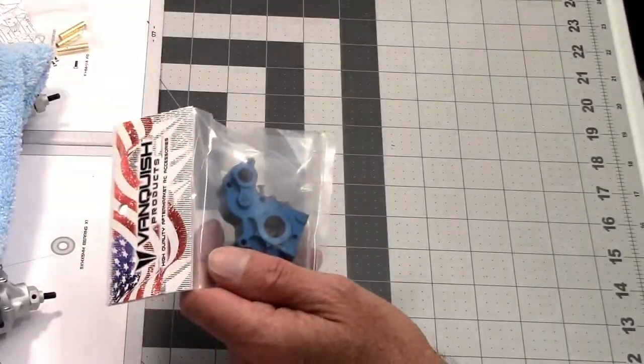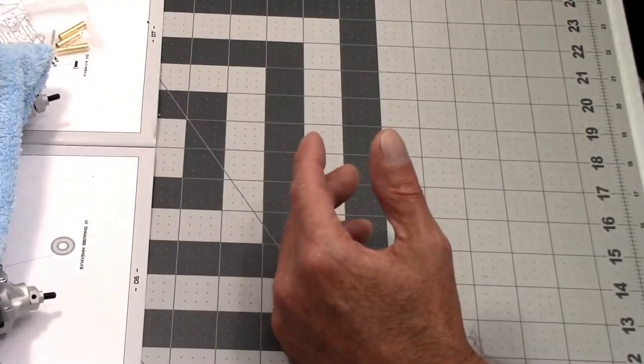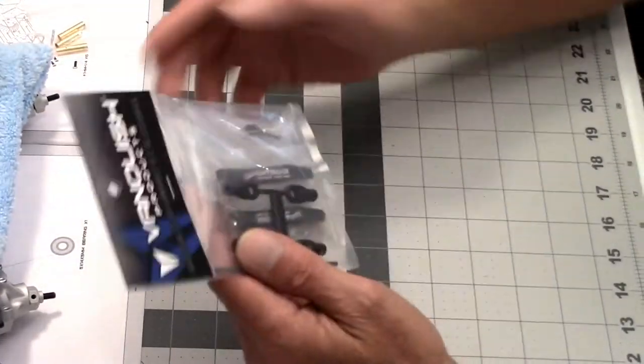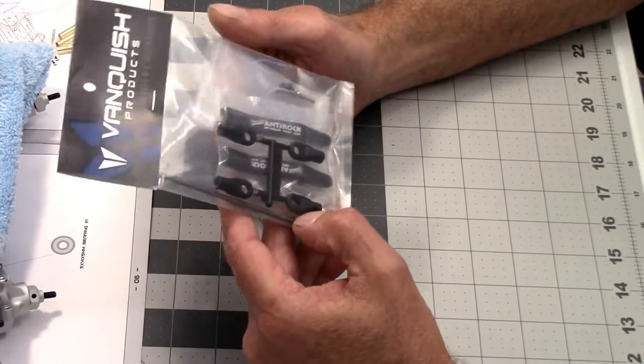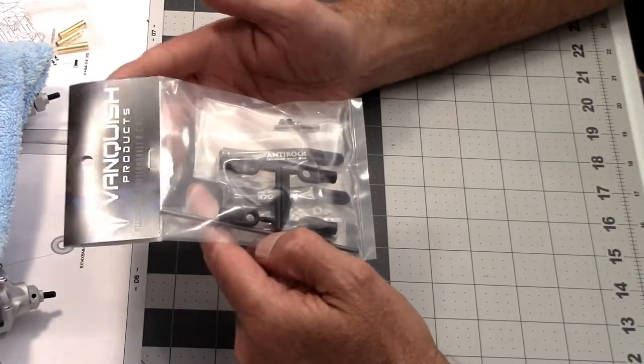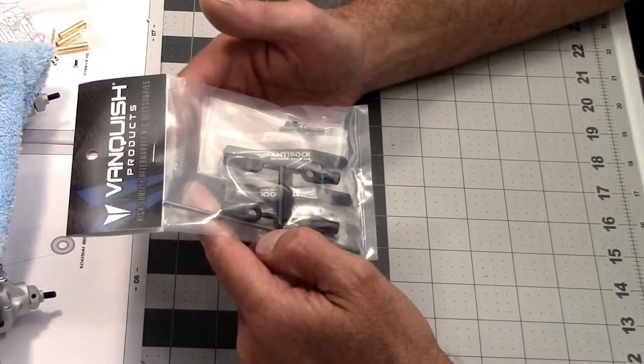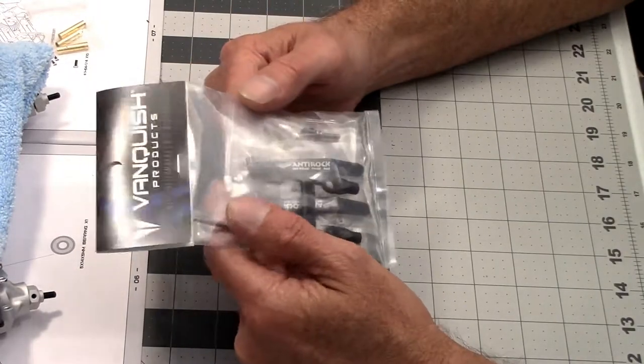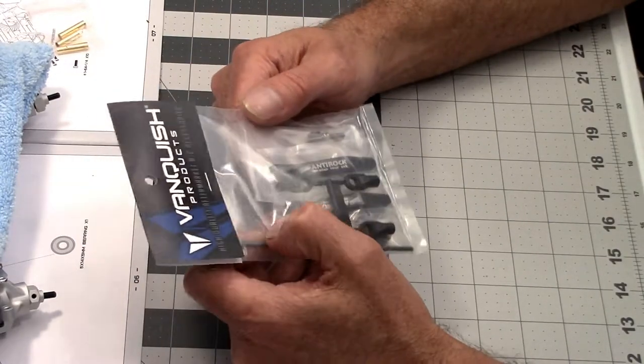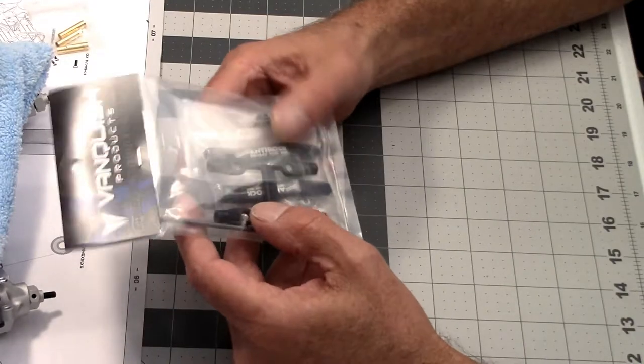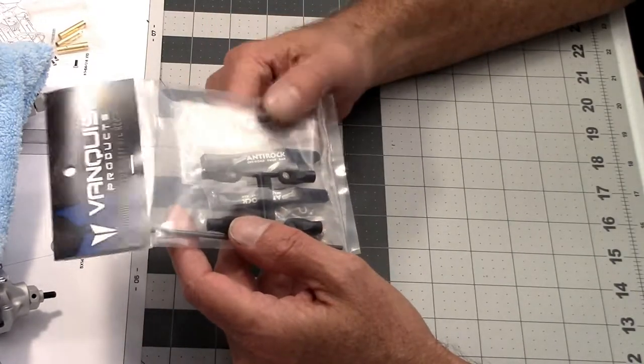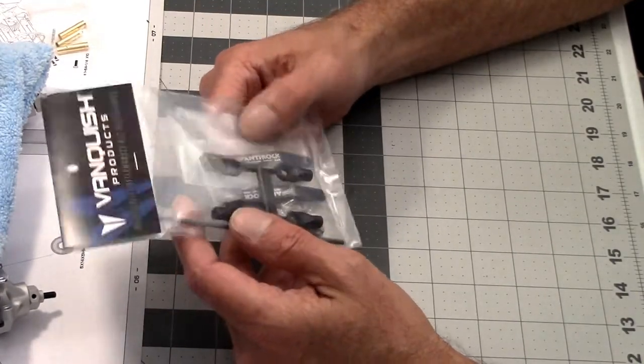And also not sure if I'm gonna use this yet, but I had the Yeti rear sway bar. It works with this vehicle. I don't know if I need it with this vehicle, but I'll probably check the truck out on a trail first, see how it does. This will prevent some of the body roll in the rear vehicle.